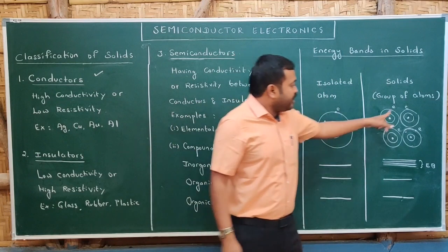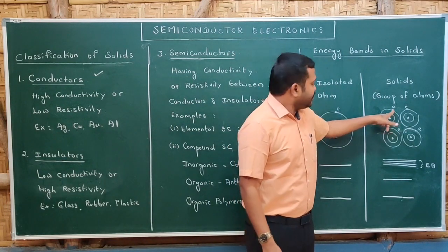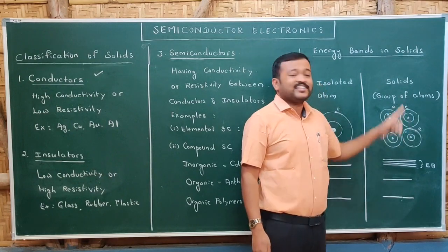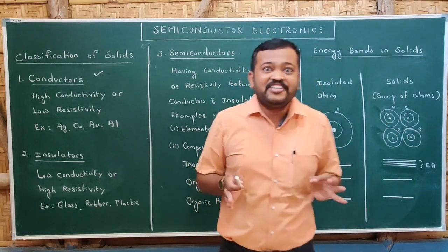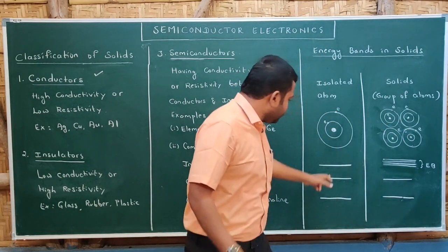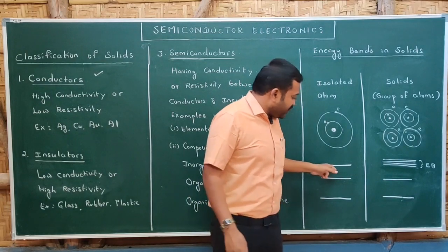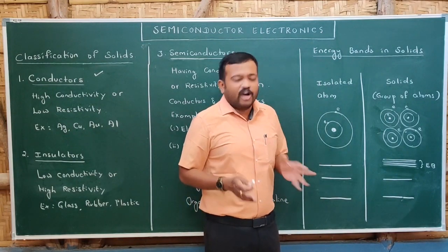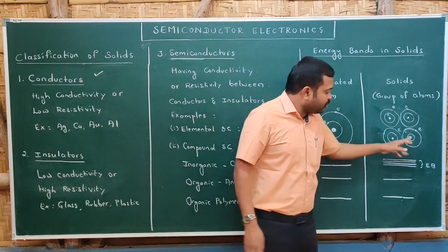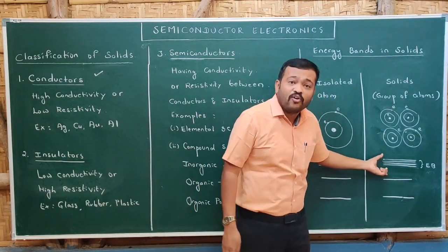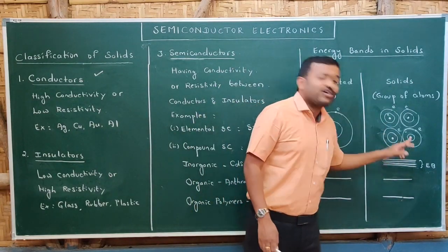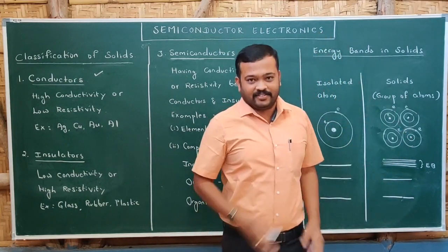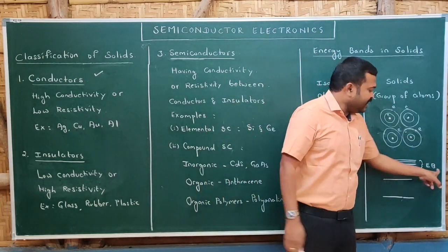Why is the energy disturbed? Because in an isolated atom, this electron has the influence of only its own nucleus. But in solids, it has more influence — it is affected by neighboring electrons and neighboring nuclei as well. Therefore, the energy of the electron is disturbed and this energy level will split. How does it split? If there are four atoms, the energy level splits into four. It will no longer look like an energy level; it looks like a band. We call this an energy band.